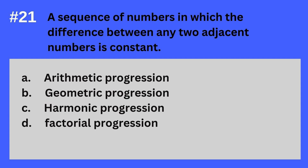Question 21. A sequence of numbers in which the difference between any two adjacent numbers is constant. A. Arithmetic progression. B. Geometric progression. C. Harmonic progression. D. Factorial progression. The answer? It's A. Arithmetic progression. A sequence of numbers in which the difference between any two adjacent numbers is constant — Arithmetic progression.